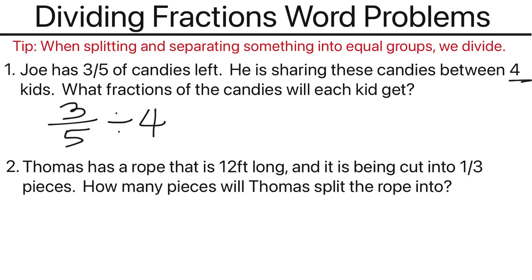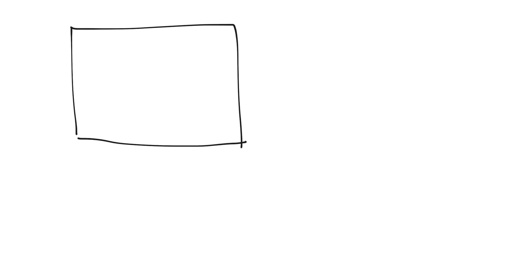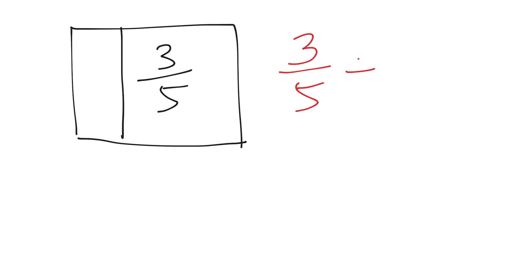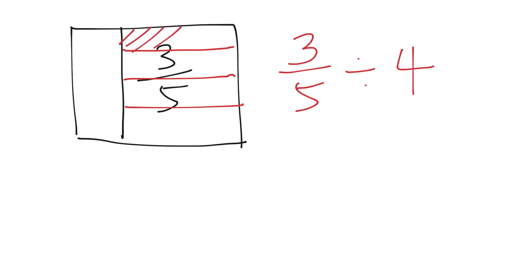If you want to look at it from a visual perspective, we have three-fifths of the candy — about this much of the candy remaining. And what we're doing is dividing among four kids. So we're going to take the three-fifths and divide among four kids, and it would look something like this — equal groups of four. And we want to find out how much each kid gets.